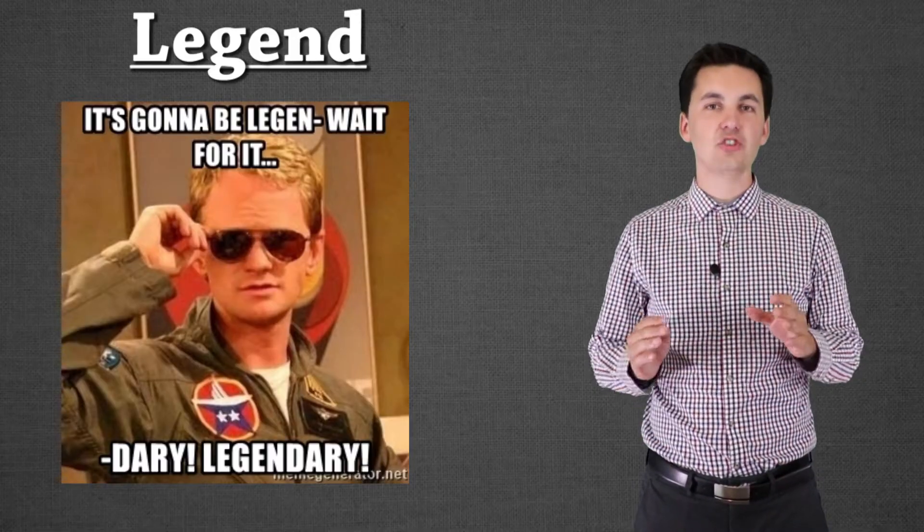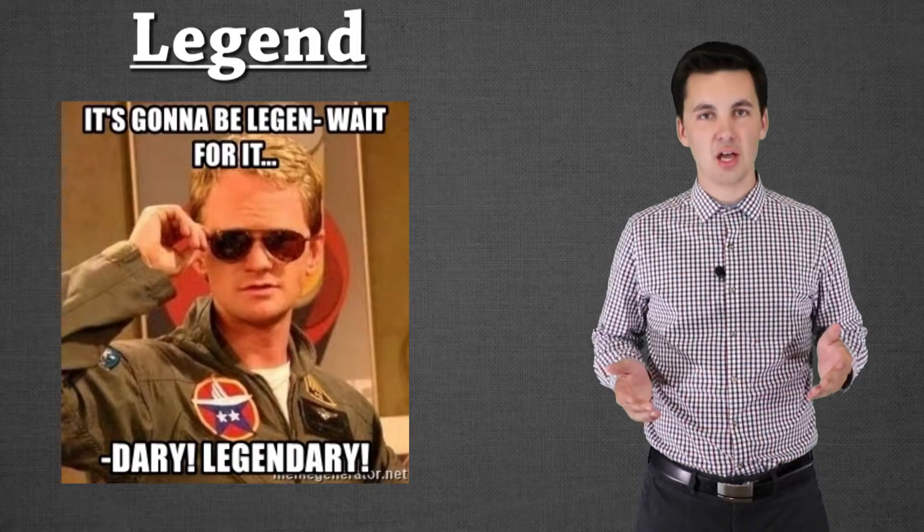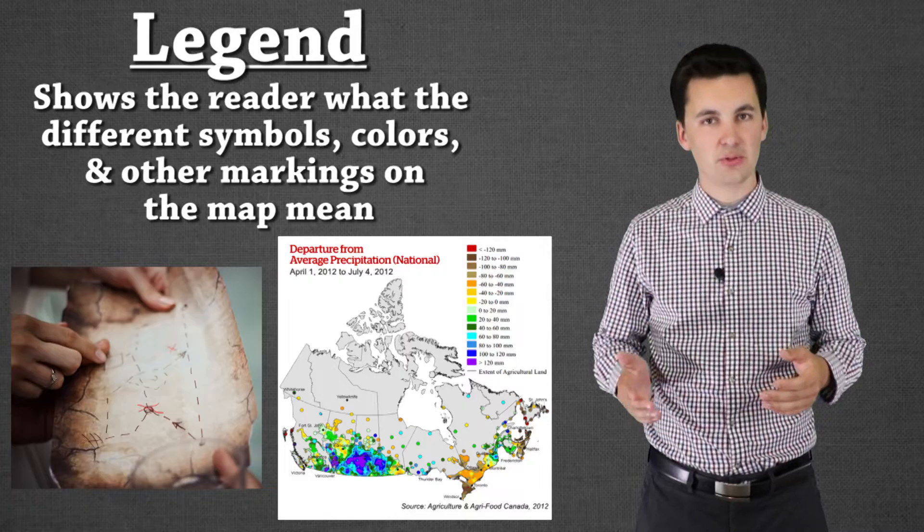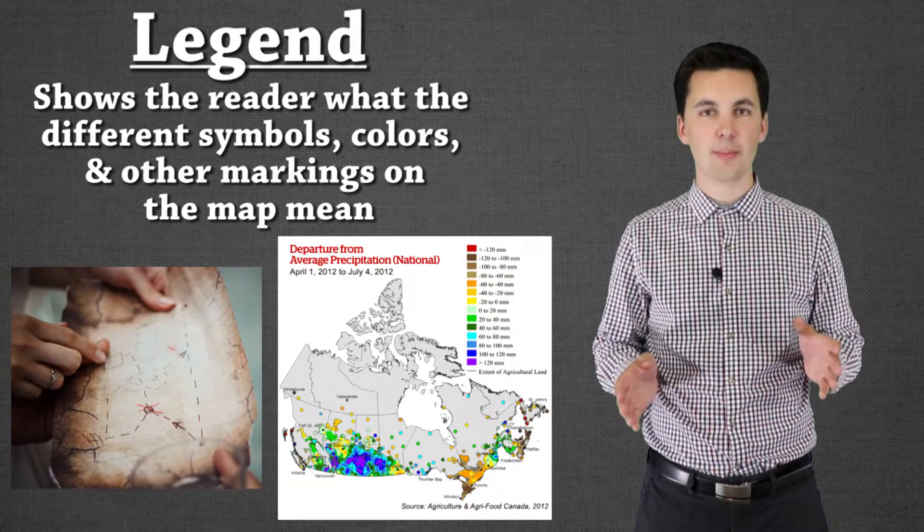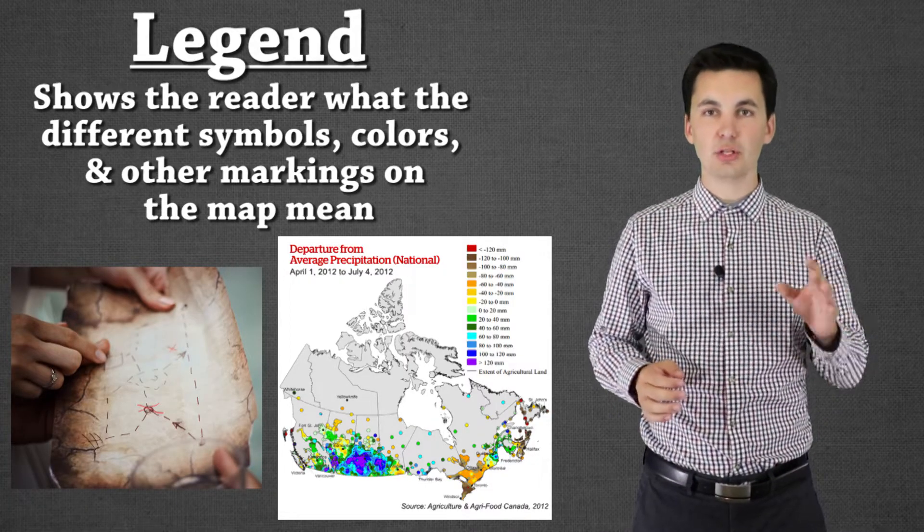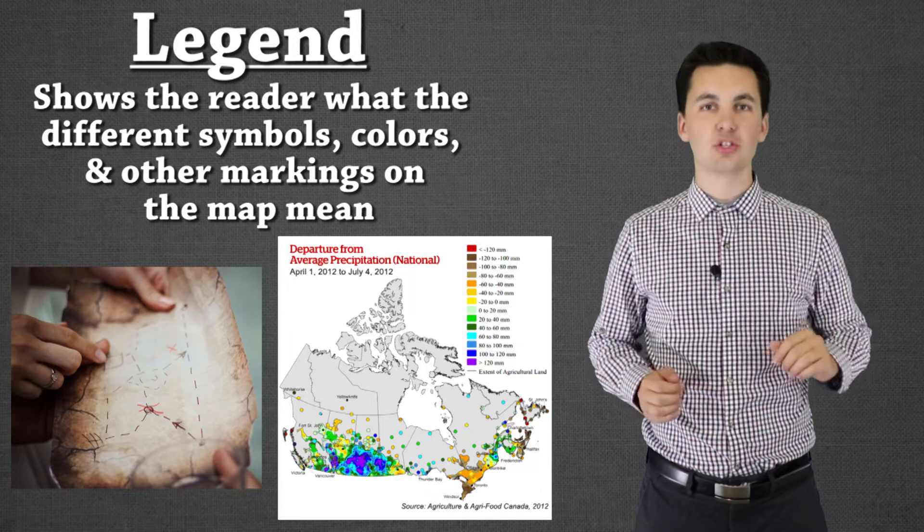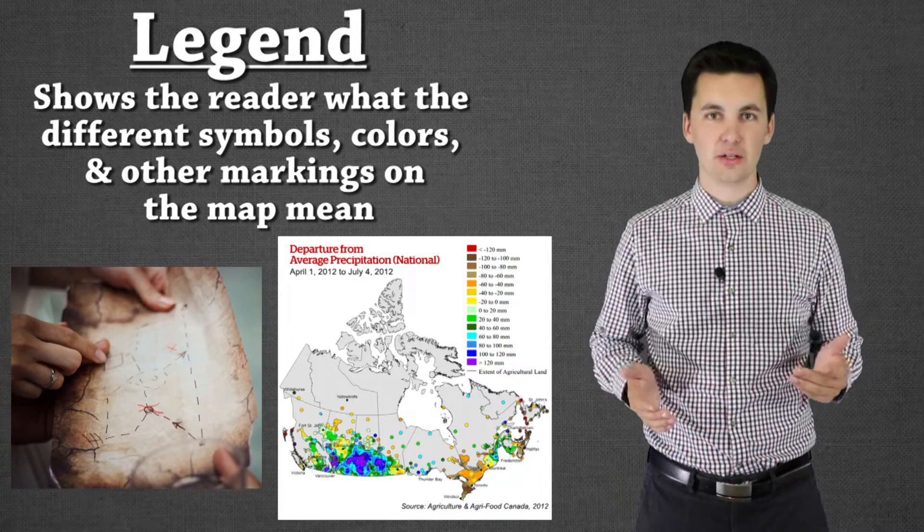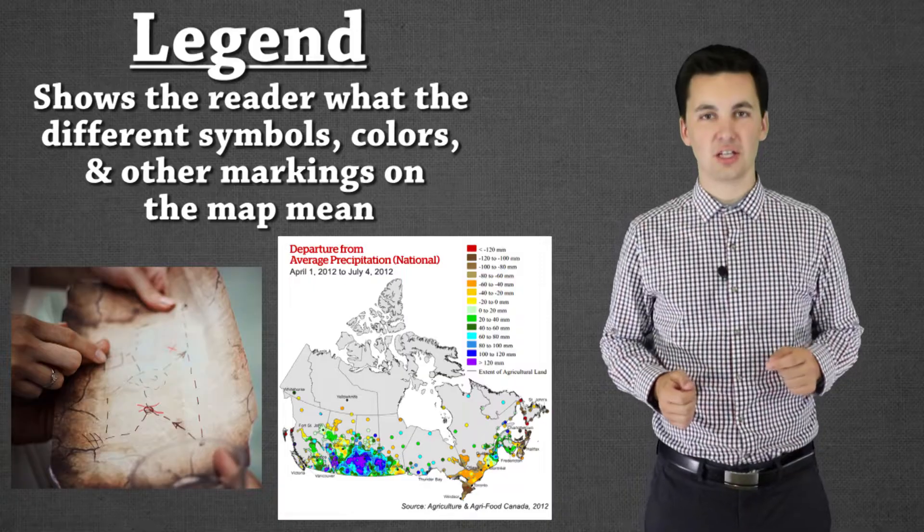The next part of TODALS is legend. Now the legend is really important. This is our key. It's going to let us know what all the different colors mean, what the shapes mean, any information that's on the map that uses a symbol, a color or anything like that. The legend will let us know exactly what that is.